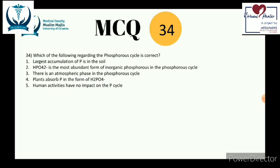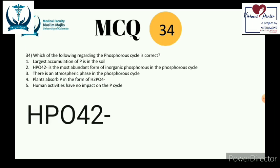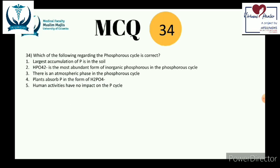Answer 2 states HPO₄²⁻ is the most abundant inorganic phosphorus form — false; it is phosphate PO₄³⁻. Answer 3 is false because the atmospheric phase is absent in the phosphorus cycle. Answer 4 — plants absorb phosphorus in the form of H₂PO₄⁻ — is true; plants absorb either H₂PO₄⁻ or HPO₄²⁻ depending on soil pH. Answer 5 is false; human interference through careless use of phosphorus fertilizers does occur. The correct answer is number 4.